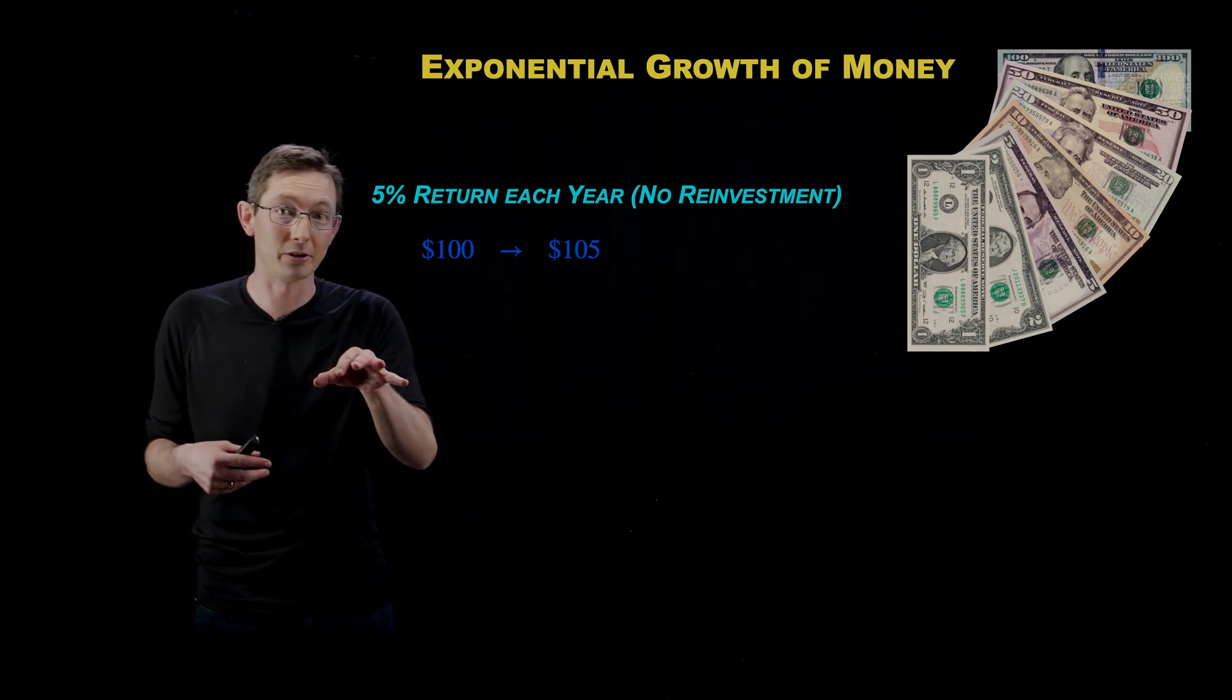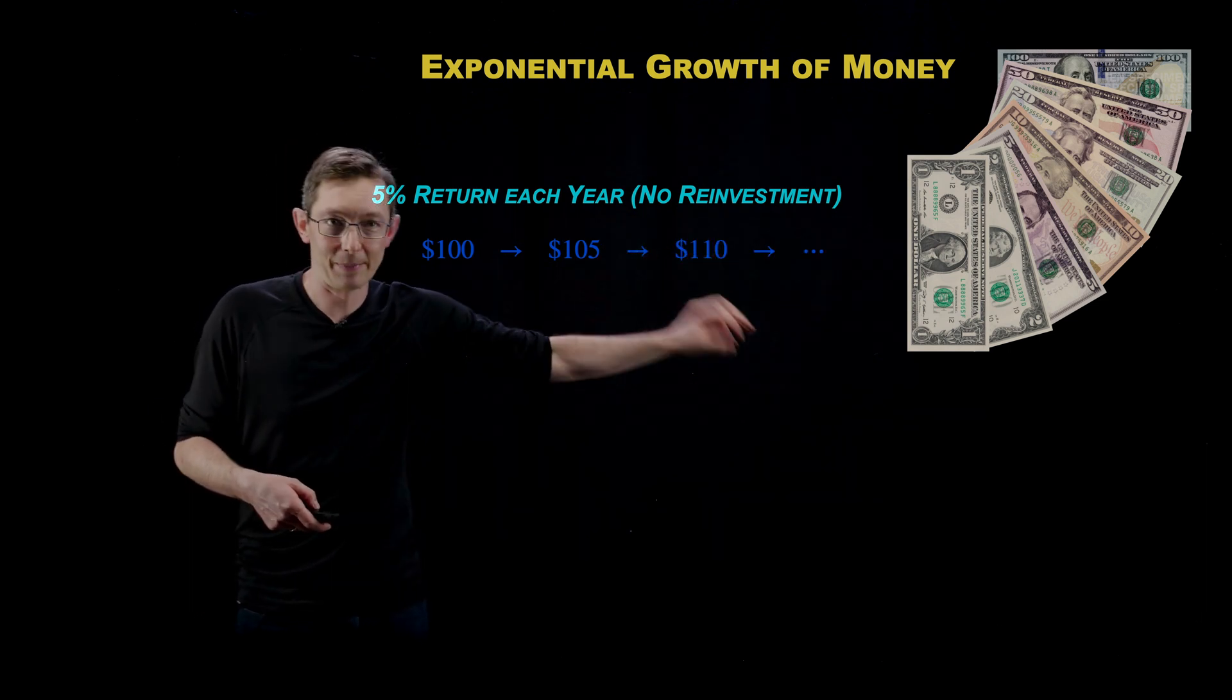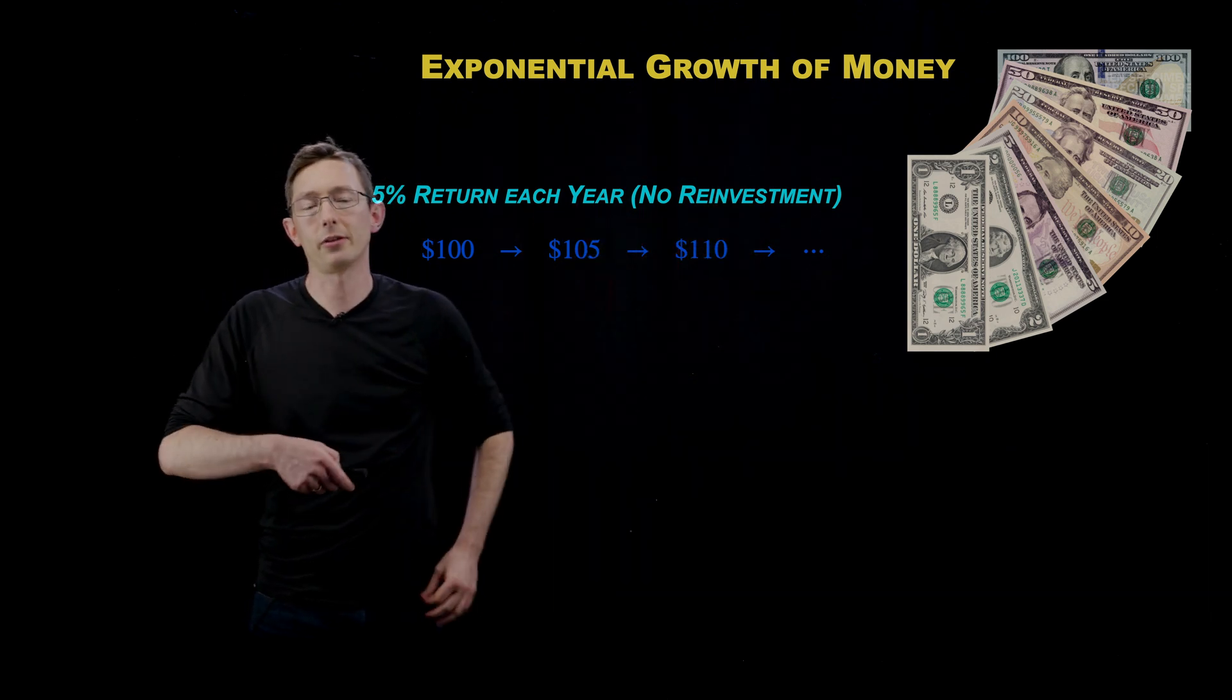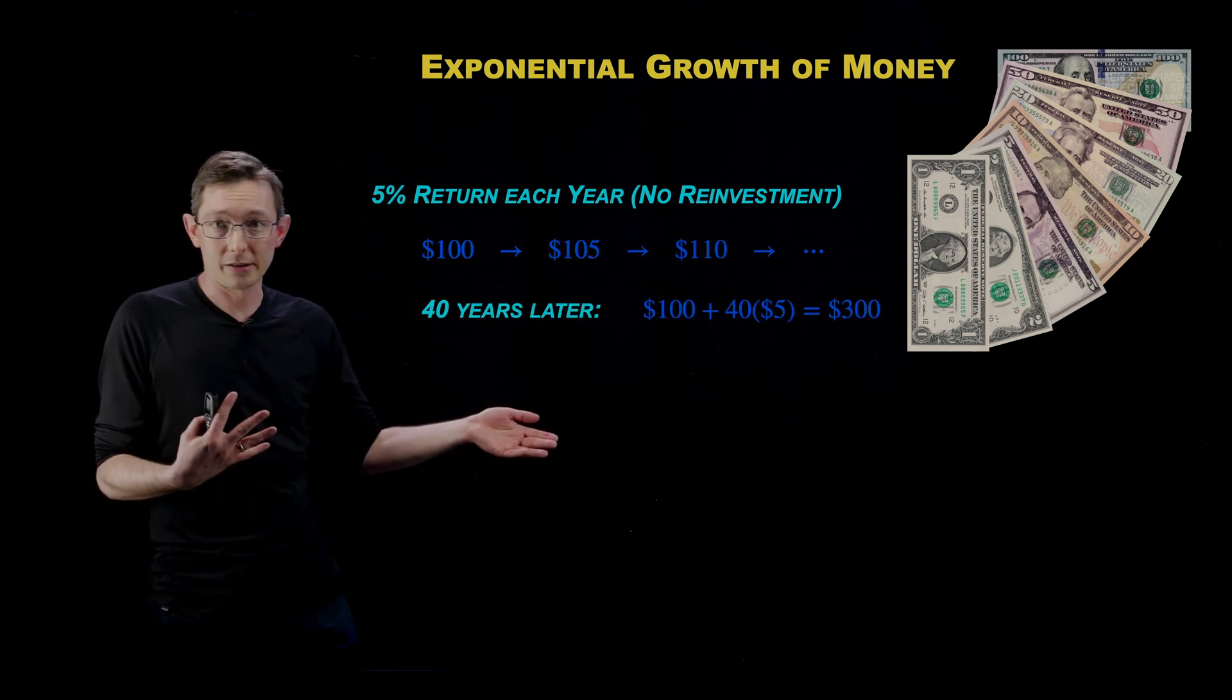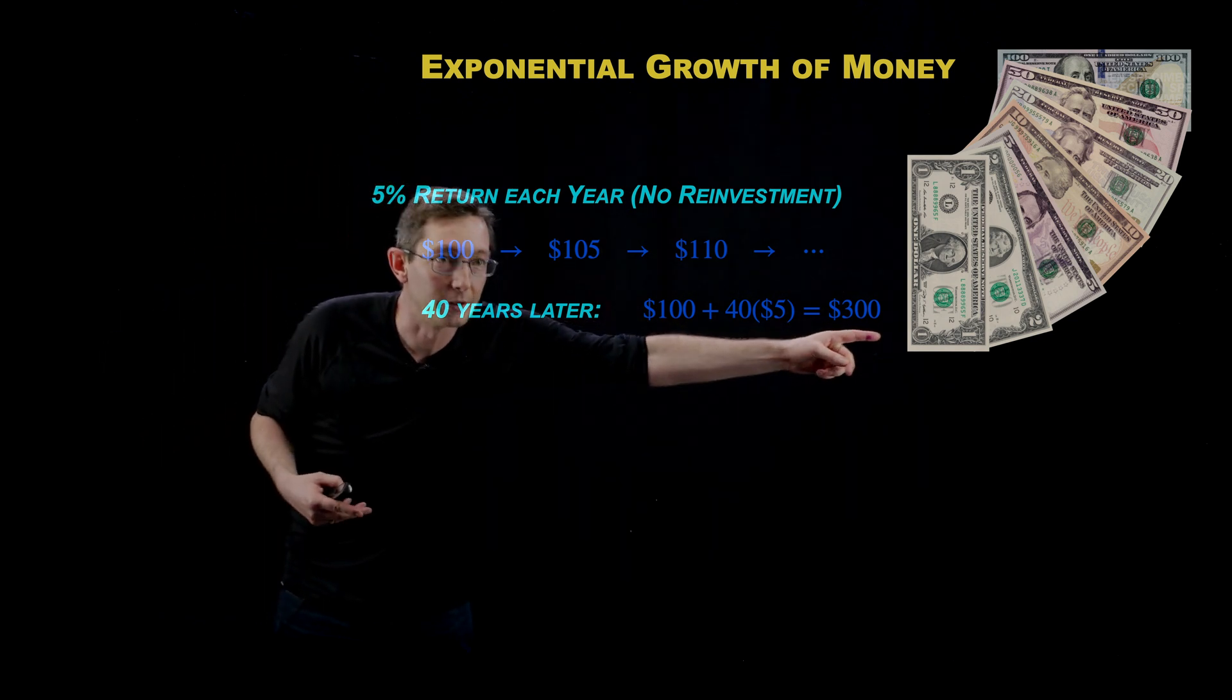And then I'm going to take my base $100 and I'm going to get another $5 after the next year. And I'm going to spend that one. And then after the next year, I'll get another $5 and so on and so forth. And after 40 years, what you can expect is that you will have a cumulative amount of money of $300.